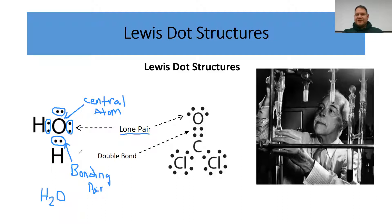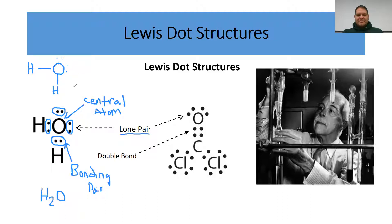Sometimes we can substitute the bonding pair — those two dots — with a hyphen or dash line. For water, instead of two dots between oxygen and hydrogen, we replace those dots with hyphens. The lone pairs remain as dots. This is another acceptable way to represent a Lewis structure.